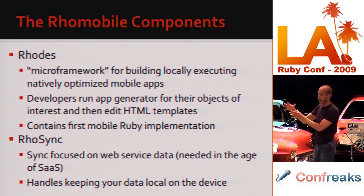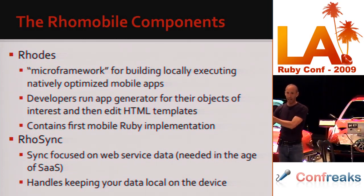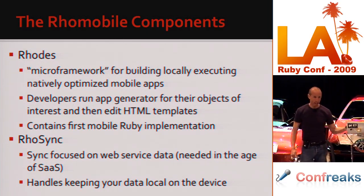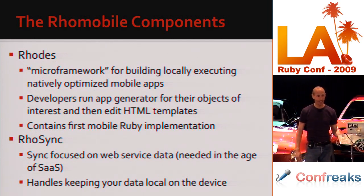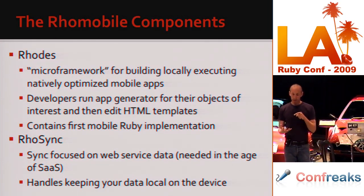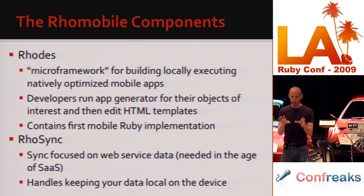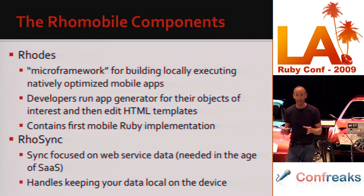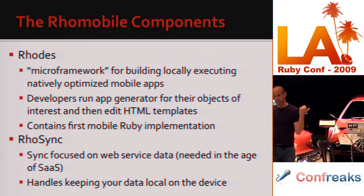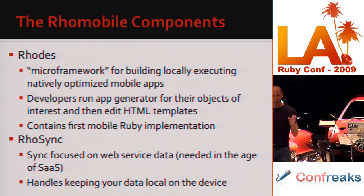The other piece is RhoSync. We say we're all about synced offline data, so we have to give you a way to do that. Having the device talking directly to your back end is not ideal — for REST it's going to be very expensive and a lot for the device to manage. So RhoSync has a client embedded in Rhodes that manages getting all the data from the back end, bringing it to your device, and taking any changes you make on the device back to the back end — all transparent to you.